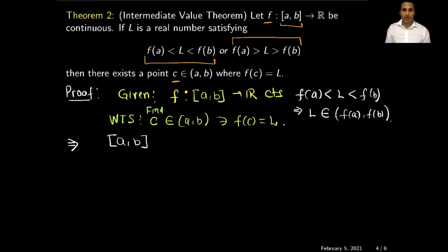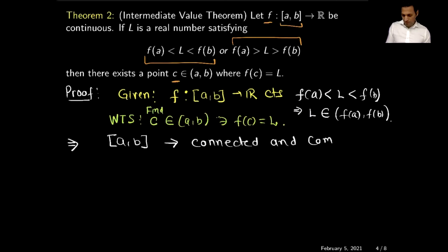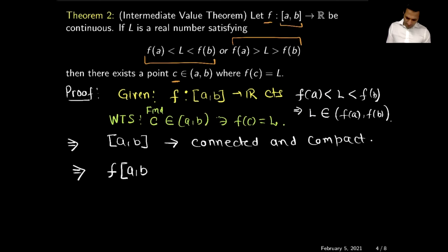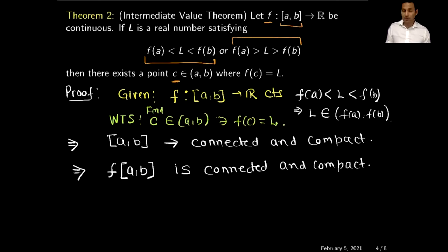Now the closed interval [a, b] is connected, and it is also compact because it is closed and bounded. Using the previous theorem and results from a previous video, f([a, b]) is both connected and compact, since f is a continuous function.